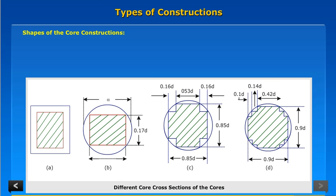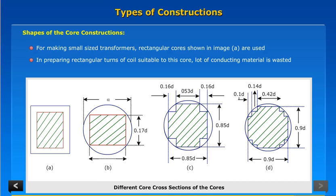Shapes of the core constructions: For making small size transformers, rectangular cores shown in image A are used. In preparing rectangular turns of coil suitable to this core, a lot of conducting material is wasted.